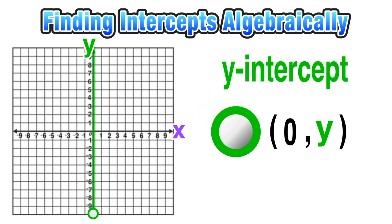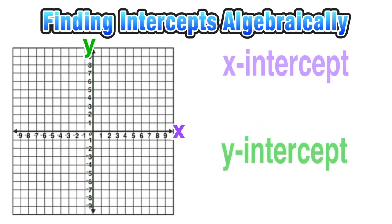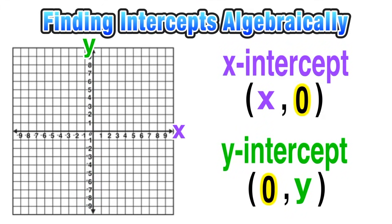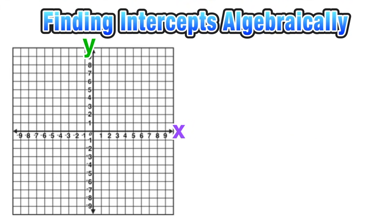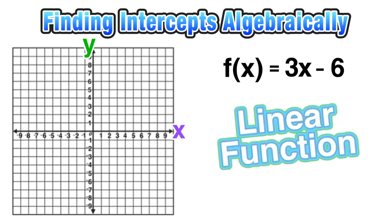So now we can quickly visually recap this concept by remembering that when we have an x-intercept, the y-coordinate will always be zero. And when we have a y-intercept, the x-coordinate will always be zero.